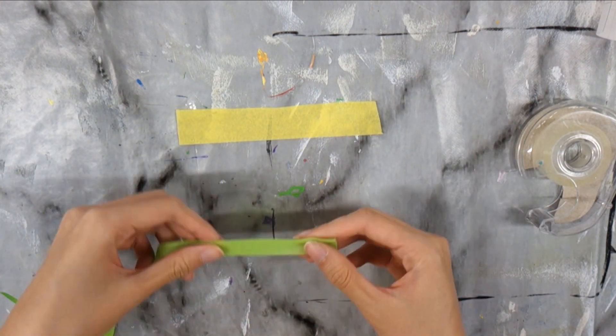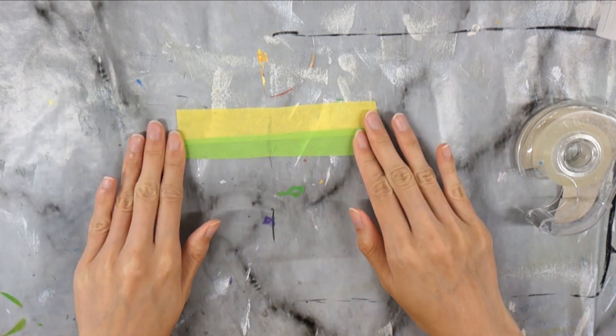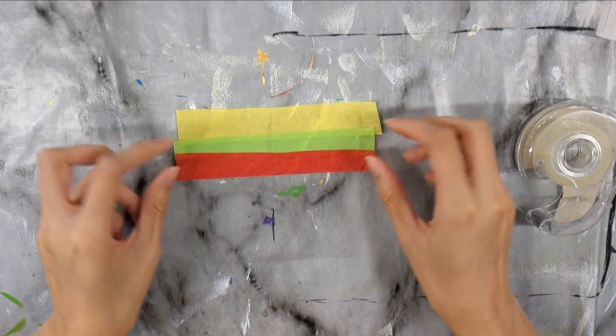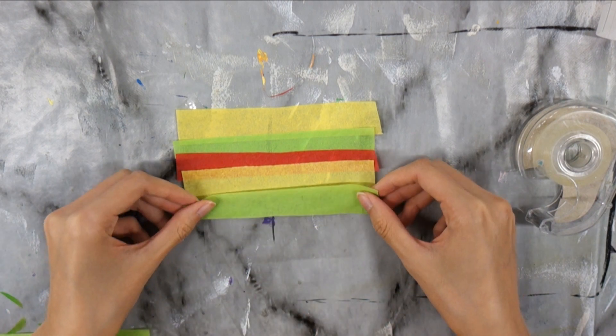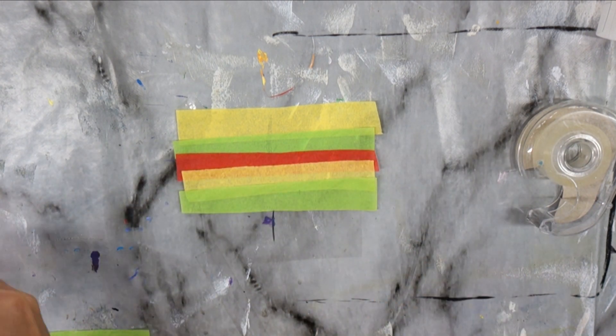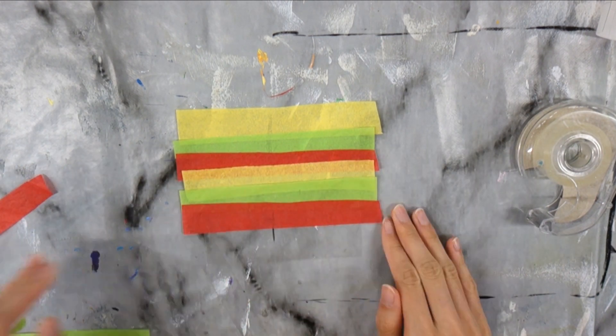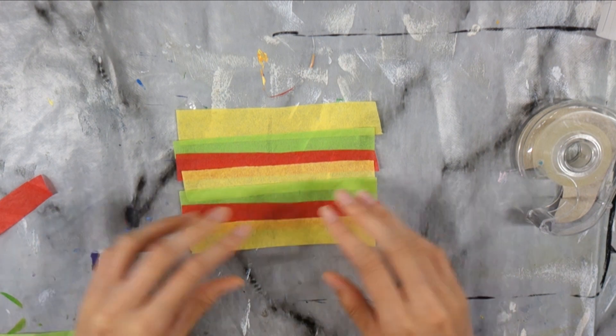Next place the colored tissue paper strips onto the sticky square. You could use whatever colors and patterns you like. Don't worry about the colors overlapping or the edges hanging off the sides as we could trim them later.